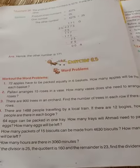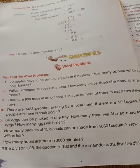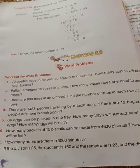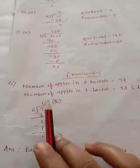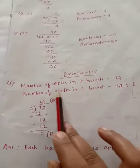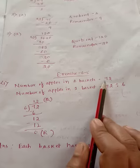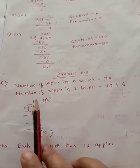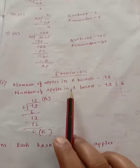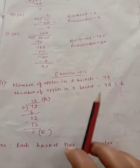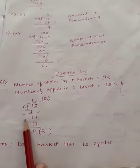For that we will see what data is given and what it is asking for. So for the solution we will write like this. Number of apples in 6 baskets is 72. Number of apples in 1 basket is 72 divided by 6.